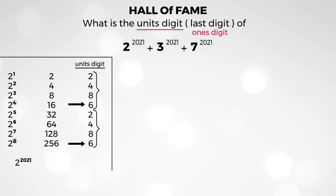So the first thing we want to check is whether the exponent 2,021 is a multiple of 4. Unfortunately, it's not. But that's okay — what about the one immediately preceding it? 2,020 is a multiple of 4: 2,020 divided by 4 is 505, which is an integer. Therefore, 2 to the power of 2,020 has units digit 6. Since 2,021 is the very next exponent in the pattern, the units digit of 2 to the power of 2,021 is 2. You don't need the big long number — just follow the pattern.